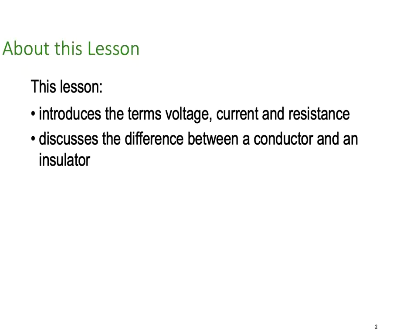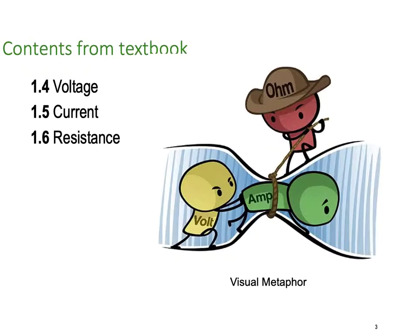We're going to start with discussing the difference between a conductor and an insulator. We're going to use the textbook by Philips, chapter 1.4, 1.5, and 1.6. It's important to note this visual metaphor. You can see here our conductor with Mr. Volt pushing Mr. Amp through the conductor, and Mr. Ohm is trying to slow that process down.